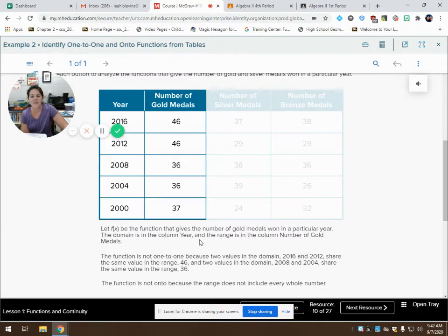So it says let f of x be the function that gives the number of gold medals won in a particular year. The domain is in the column year, this one right here, in the column year, and the range is in the column number of gold medals. So this is my domain over here in year, and my number of gold medals is my range.